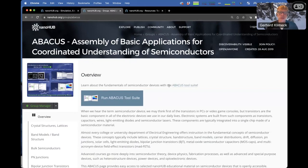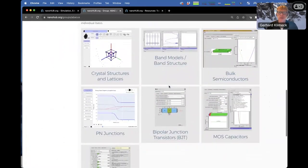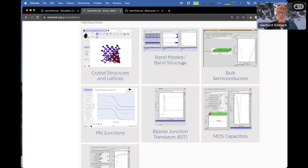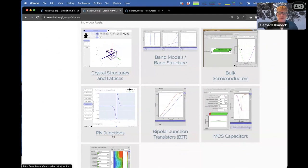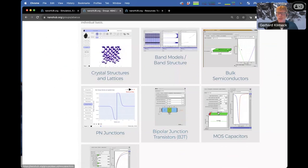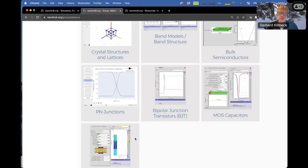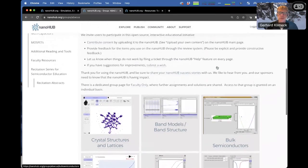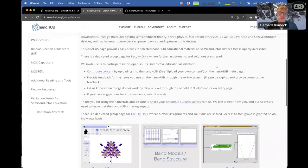It's in a group on Nanohub. Abacus really runs through a standard semiconductor course where you start off from crystals, develop band structure models, have bulk semiconductors, then understand and model PN junctions and the bipolar junction transistor. And then towards the end of the course, typically you have MOS capacitors and MOSFETs. These are animations that were created with this Abacus toolset. It's actually a tool of tools. There's multiple tools on the inside of Abacus.